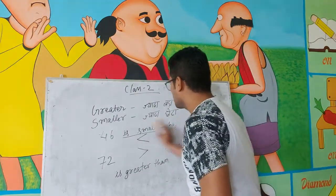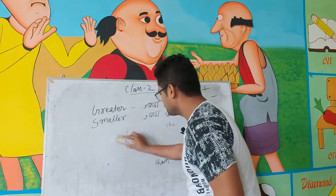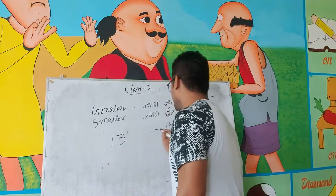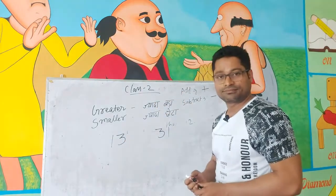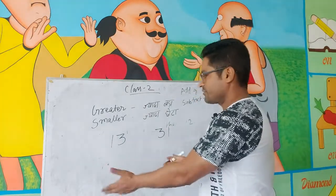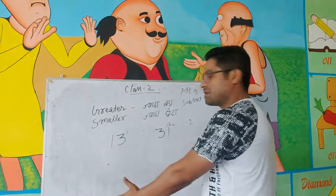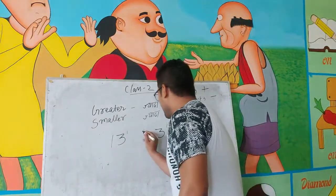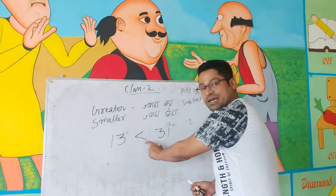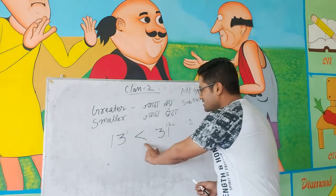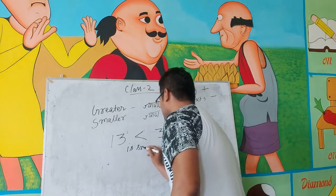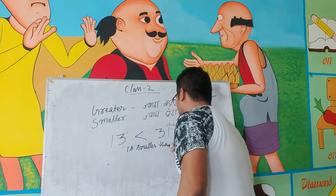For example, अगर numbers हैं 13 और 31. फिर से देखो — दाया वाला ज्यादा बड़ा है या बाया वाला? Of course, बाया वाला छोटा है, दाया वाला बड़ा है. तो हम यह statement बनाएंगे — 13 is smaller than 31.